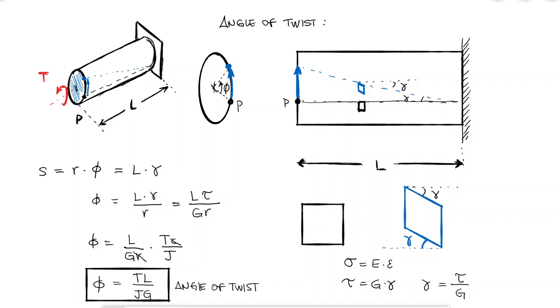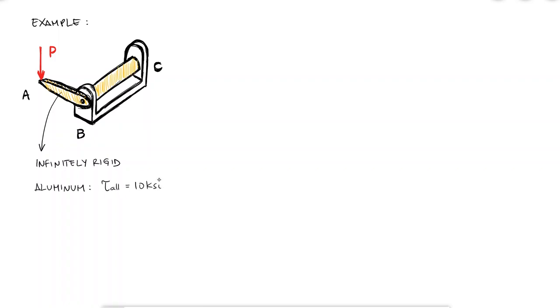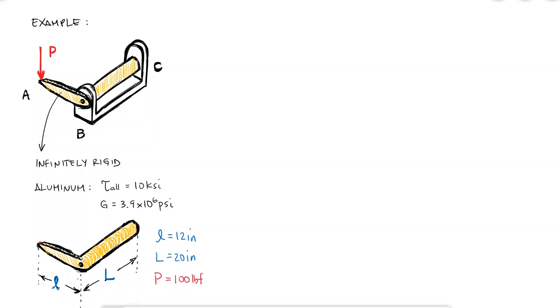Let's take a look at a simple design example where we put into use what we've learned. Handle AB is connected to rod BC where point C is fixed and B is allowed to rotate. The handle AB is subjected to a load P at location A and handle AB is assumed to be completely rigid and not deflect due to the bending caused by load P. This handle rod structure is made of aluminum which has an allowable stress of 10 KSI and a shearing modulus of 3.9 times 10 to the 6 PSI. The length of the handle AB is 12 inches and the length of the rod is 20 inches and the load P is equal to 100 pounds. I would like to know what is the required diameter of the rod if the displacement of A should not exceed 1 inch.